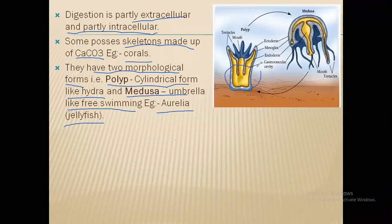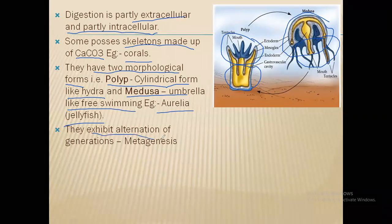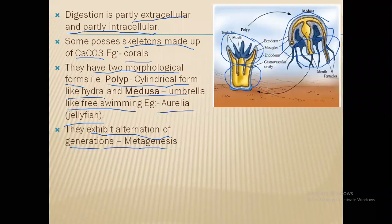In the medusa form, the body is on the upper surface and mouth and tentacles are on the lower side — it is completely inverted compared to polyp. A unique mechanism is that during the life cycle these organisms alternate between medusa and polyp forms. Similar to alternation of generations in the plant kingdom, they alternate morphologically between the two forms. This process of alternating from polyp to medusa and medusa to polyp is specifically called metagenesis.